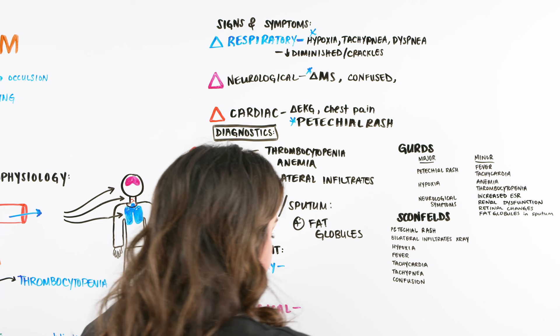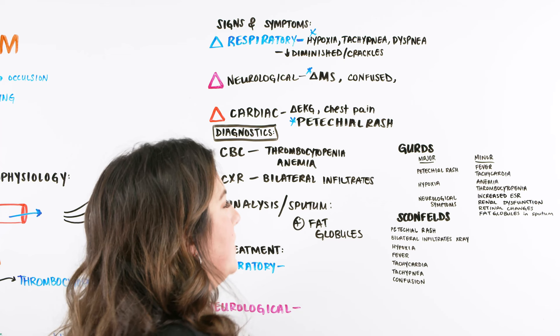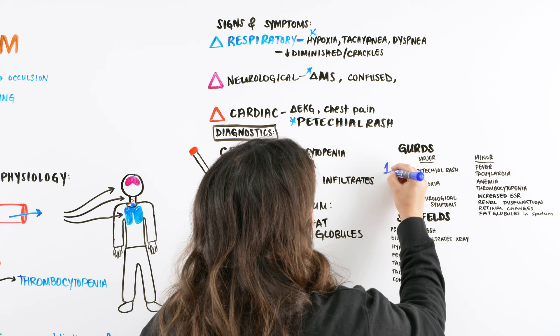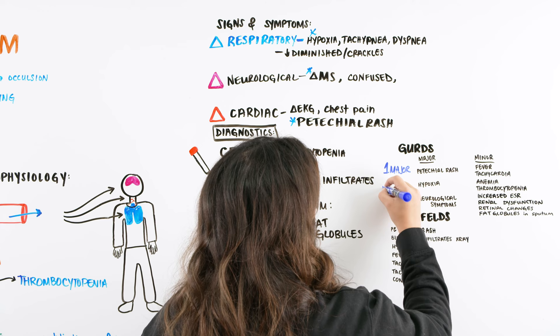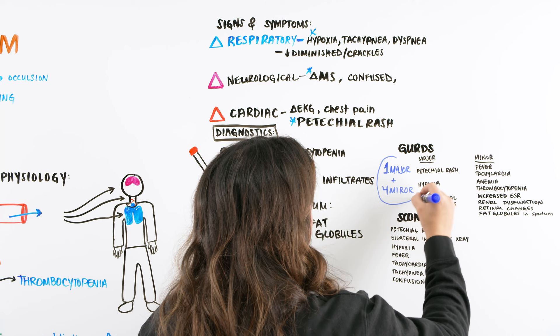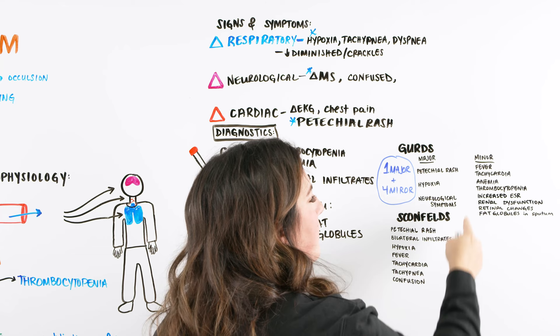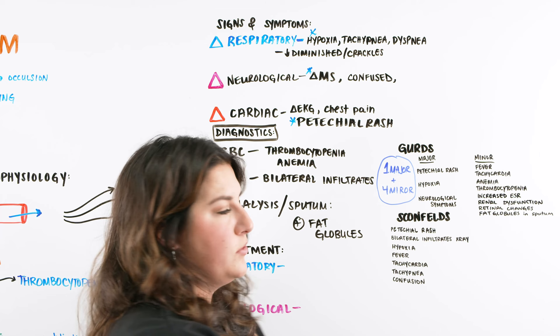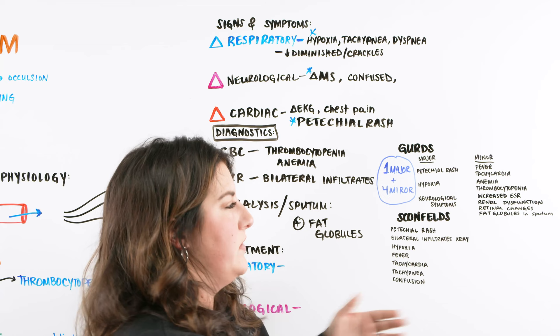Depending on the facility and what the provider likes to use, they might use Gurd's criteria. With Gurd's criteria, we're looking for a patient that has one major and four minor findings. So if a patient is looking hypoxic and then they start with a fever, their heart is racing, they're having trouble urinating, and we found fat globules in the sputum — this patient would meet the criteria for a possible fat embolism. It's just something you can think: what did the doc use to say this patient definitely has fat embolism?